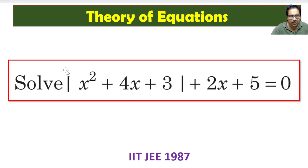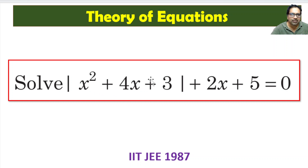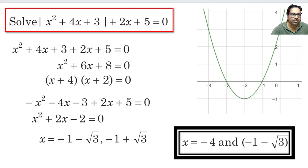So what we will do: first, let us find out where x squared plus 4x plus 3 is positive or negative, and then split this entire equation into two parts — where this is positive, what will happen, and where this is negative, what will happen.